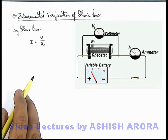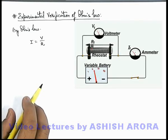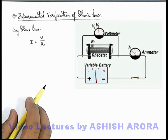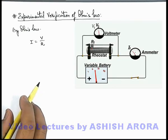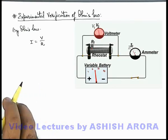we can see if the voltage is increased from say a given value of V1 to V2, the current in the circuit will also increase. The voltage we can measure from this voltmeter and current we can measure from the ammeter.